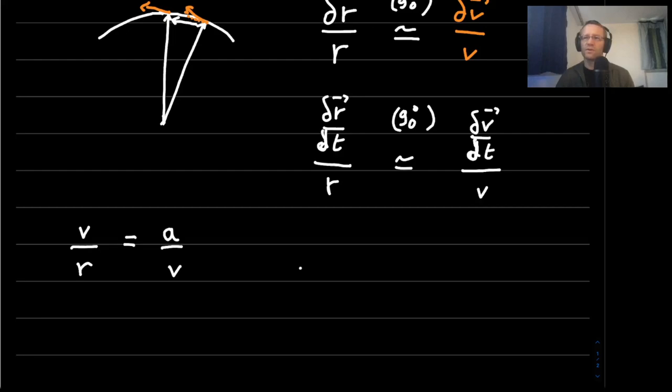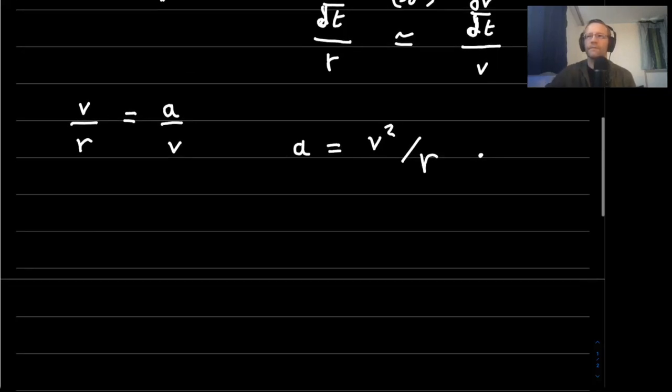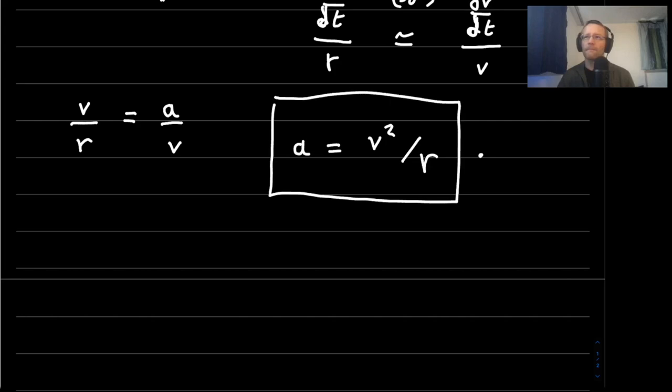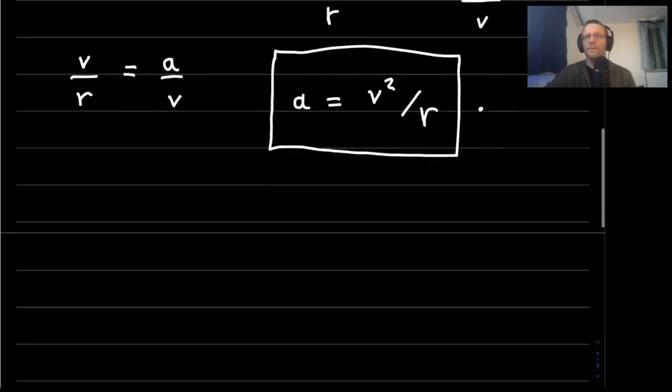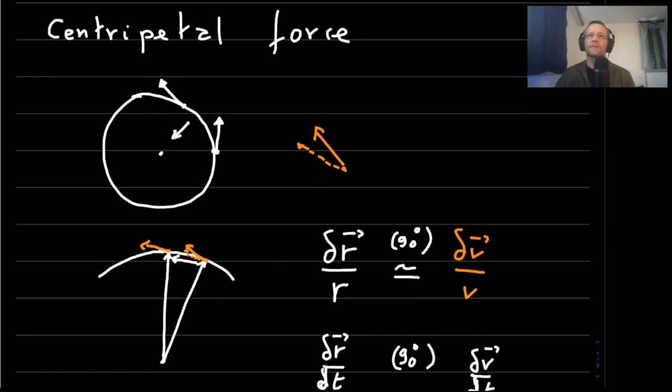So in other words, the centripetal acceleration is the velocity squared of the rider divided by the radius of the track. So this is our first result that we need. This is the centripetal acceleration.